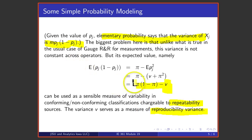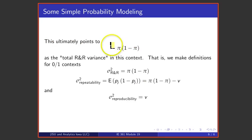So if this whole thing is a kind of repeatability variance, and it's gotten by subtracting V from π(1 minus π), then it seems plausible to call π(1 minus π) a total, or overall, or R&R variance.